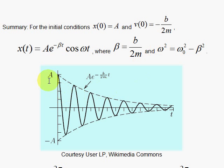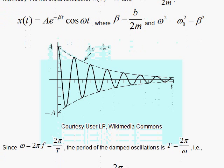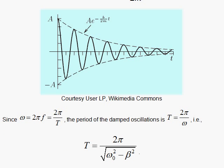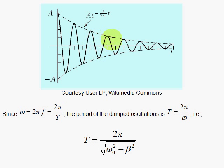The last thing we are going to do is show you how to get the time it takes to do one cycle — the period. You may recall from an earlier class: omega equals 2 pi f, which equals 2 pi over T, your period. So your period is 2 pi over omega. And that gives you the time it takes to do one cycle on its way to decreasing amplitude, over and over, so that it eventually dies down to 0.